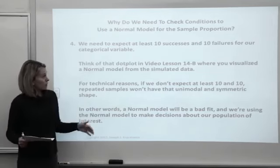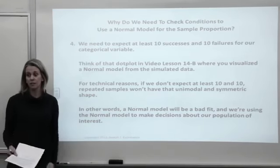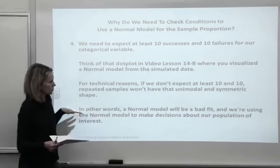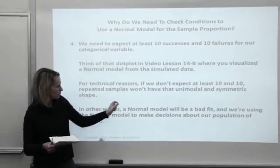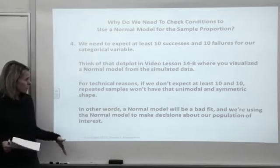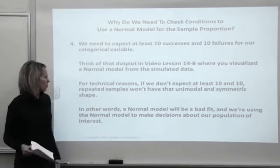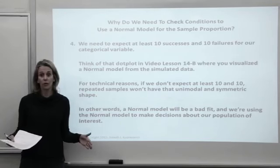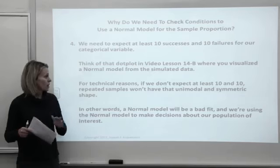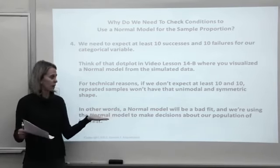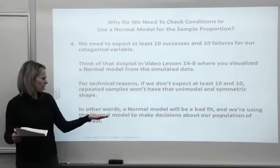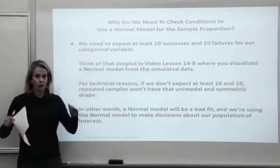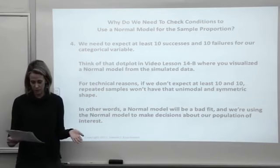The fourth condition is the success-failure condition. We need to expect at least ten successes and at least ten failures for our categorical variable. If we don't expect at least ten and ten, our data won't have that nice unimodal and symmetric shape — the normal model will be a bad fit. We saw this when simulations were run selecting from the population many times. At least ten successes and ten failures ensures the normal model is appropriate.